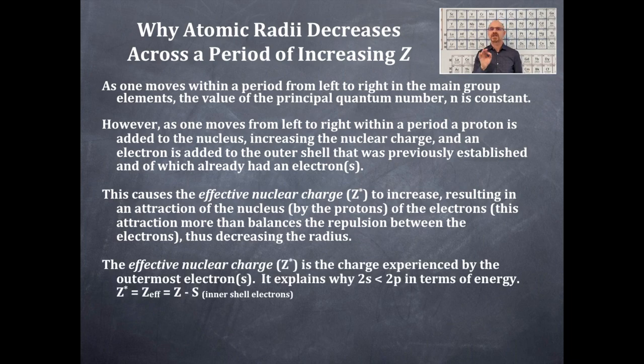The effective nuclear charge Z* is the charge experienced by the outermost electron or electrons. This explains why 2s is less than 2p in terms of energy—the 2s is lower in energy. Z* or the effective nuclear charge equals Z minus S, where S is the inner shell electrons.